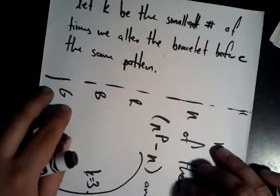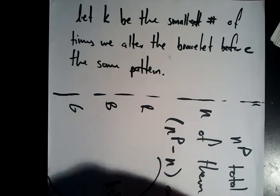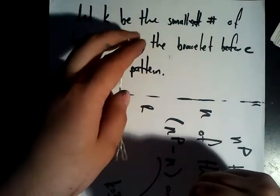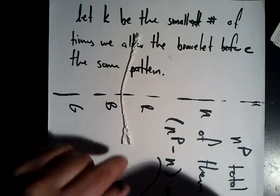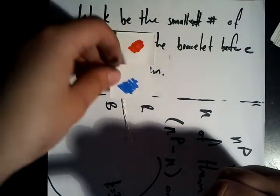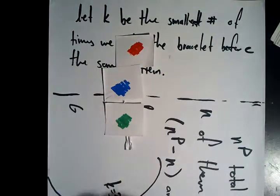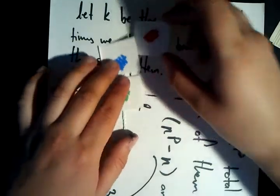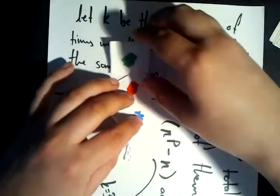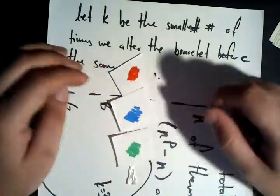So K is the least number of times you can alter it before we find the same pattern. And notice in this one, the K seems to be three because if it's red, blue, green, we alter it once, so then it becomes blue, green, red. Alter it a second time, so it becomes green, red, blue. Alter it a third time, get red, blue, green, just like we started with. So K seems to be three in this case.